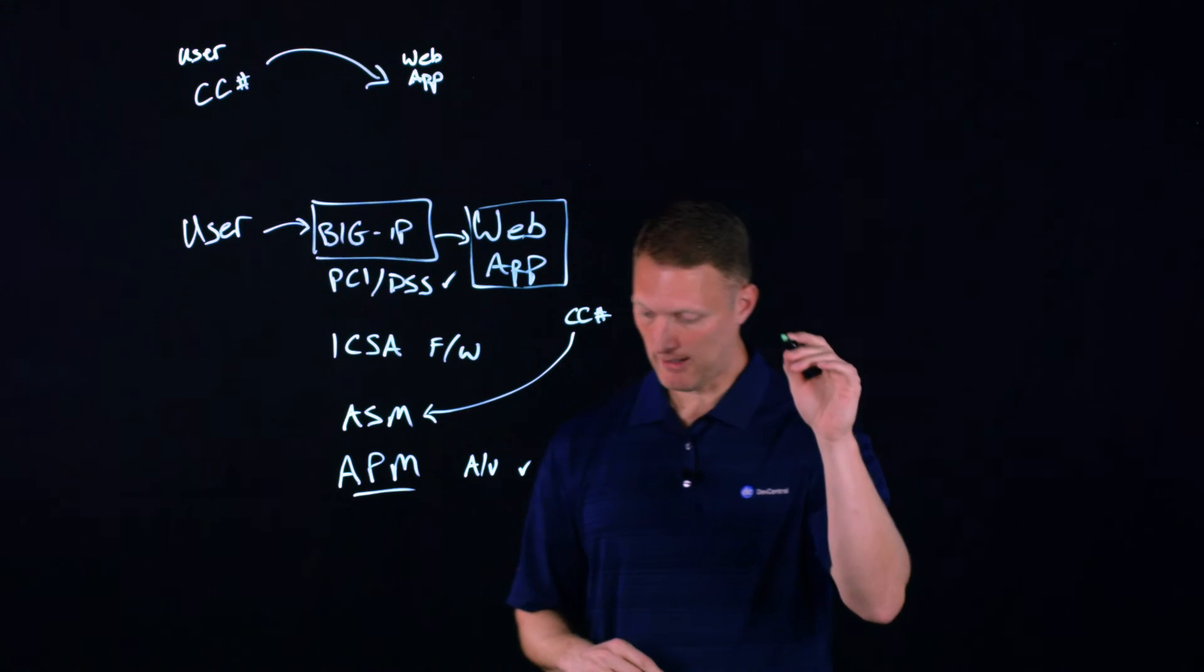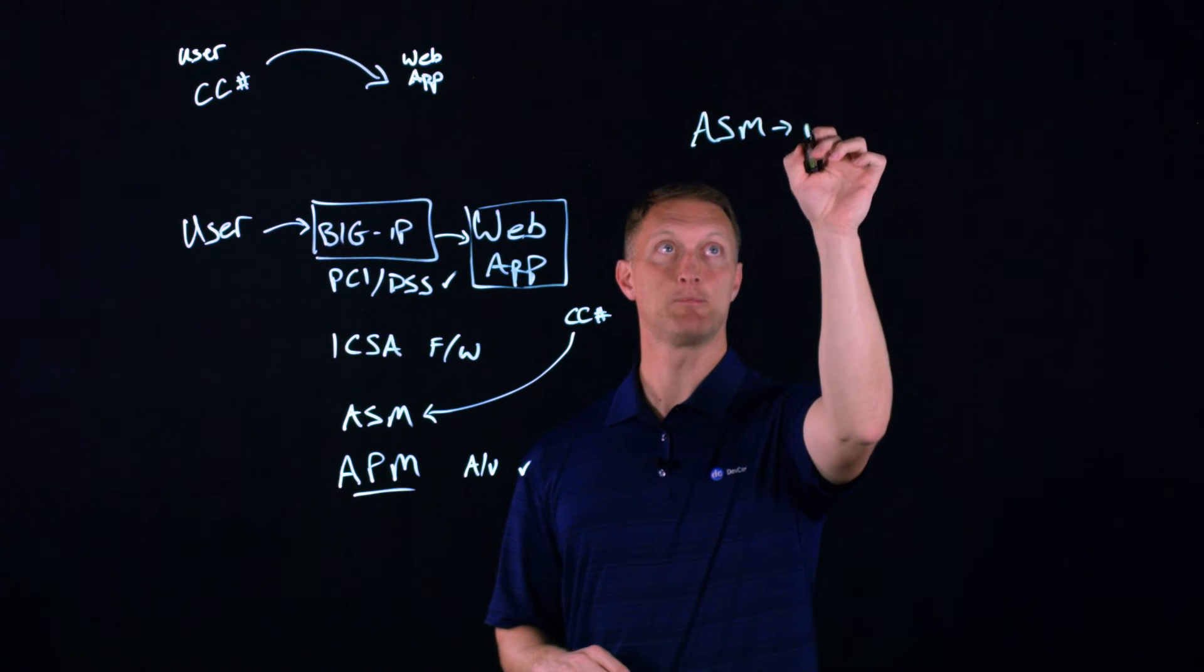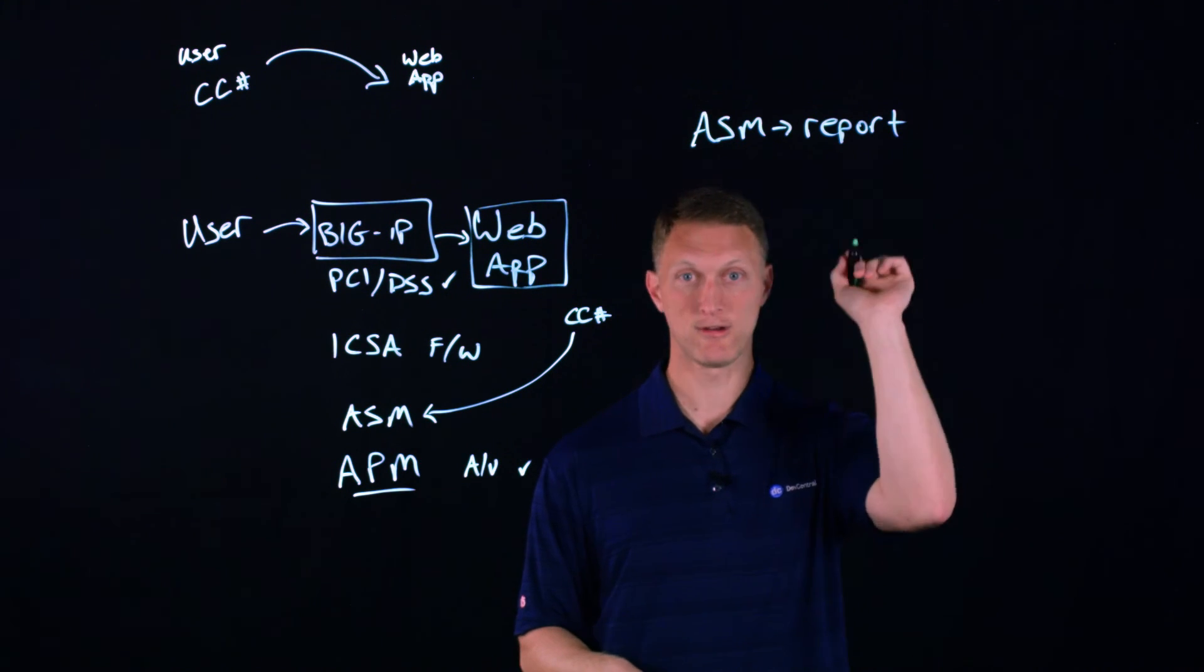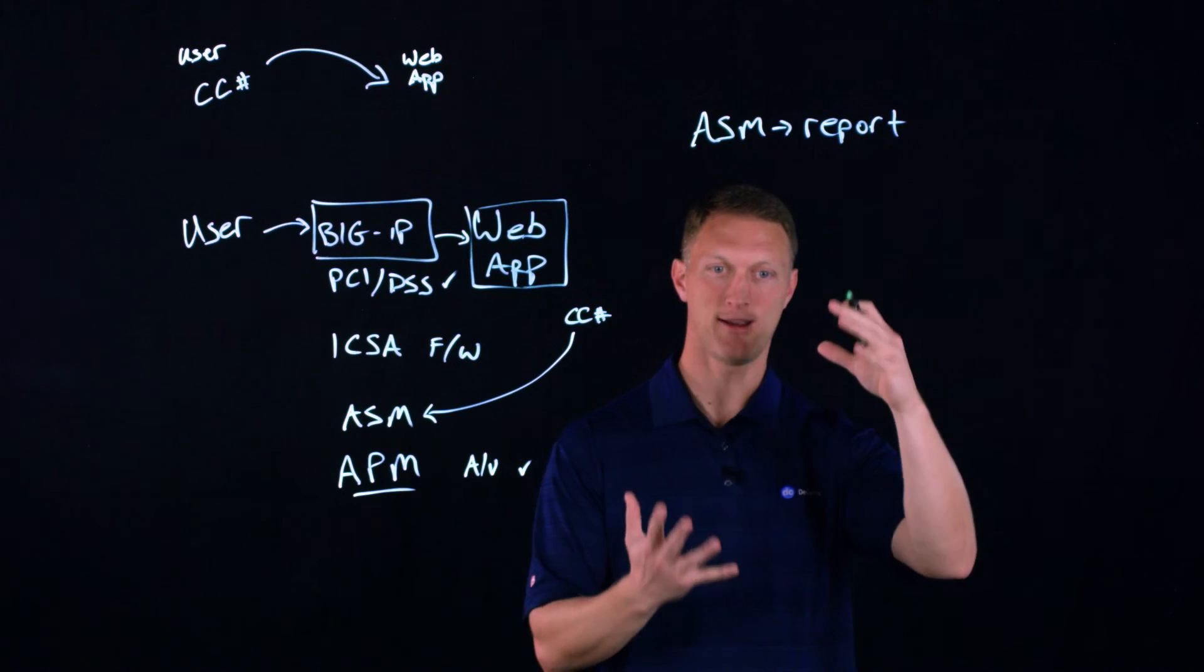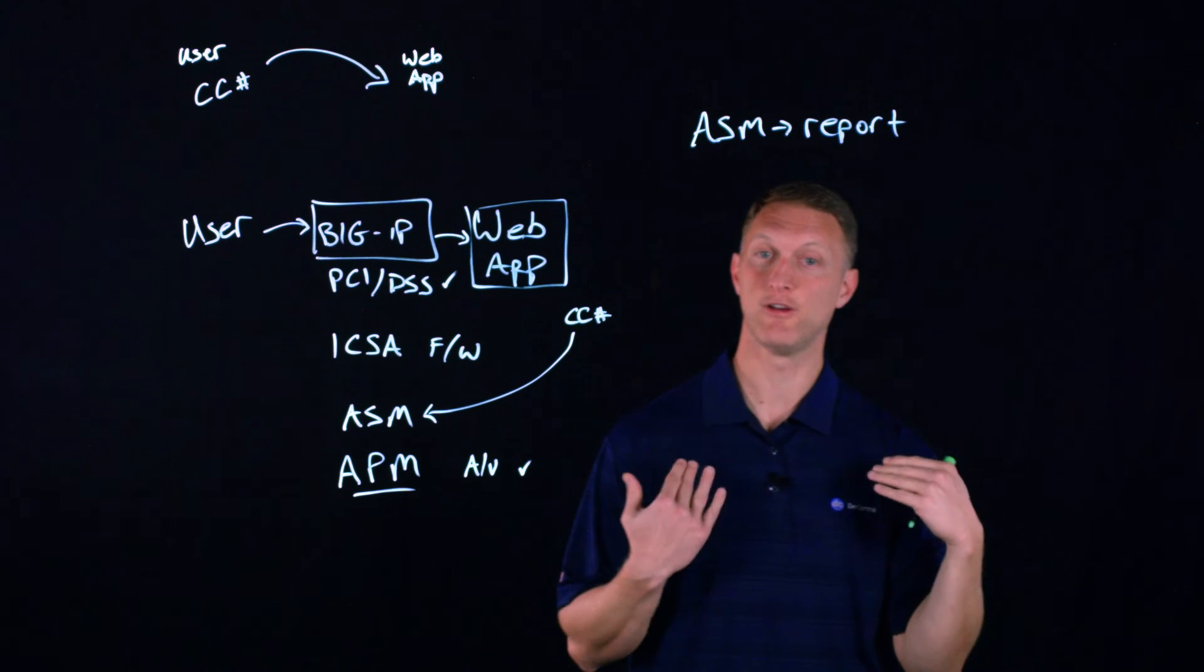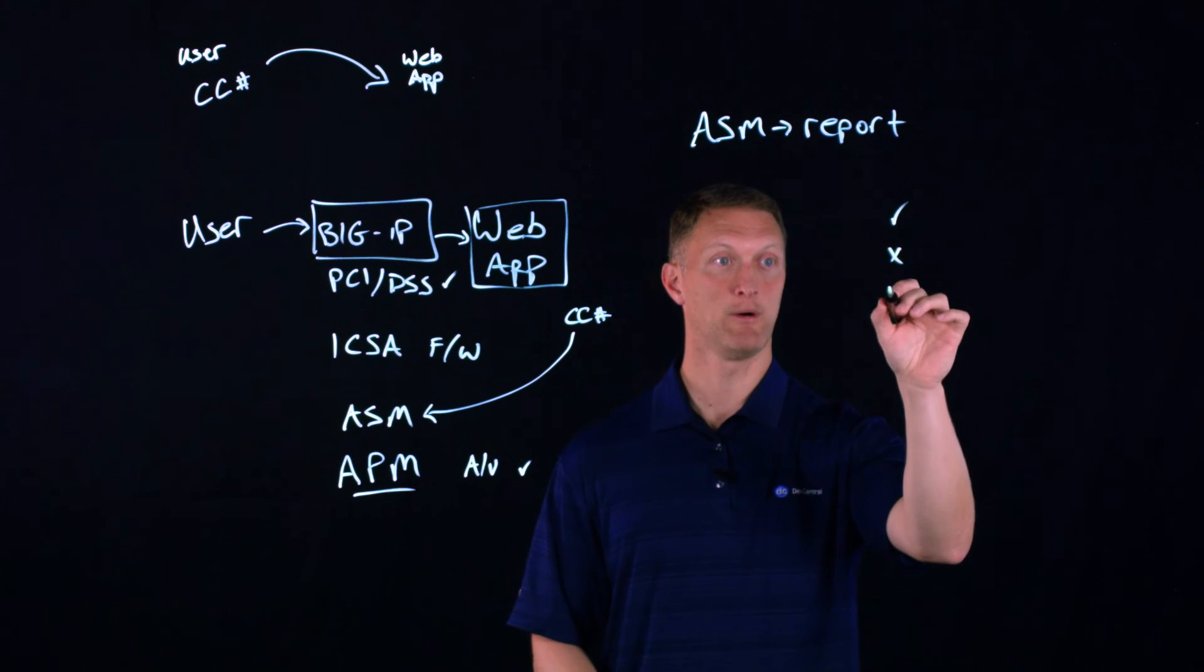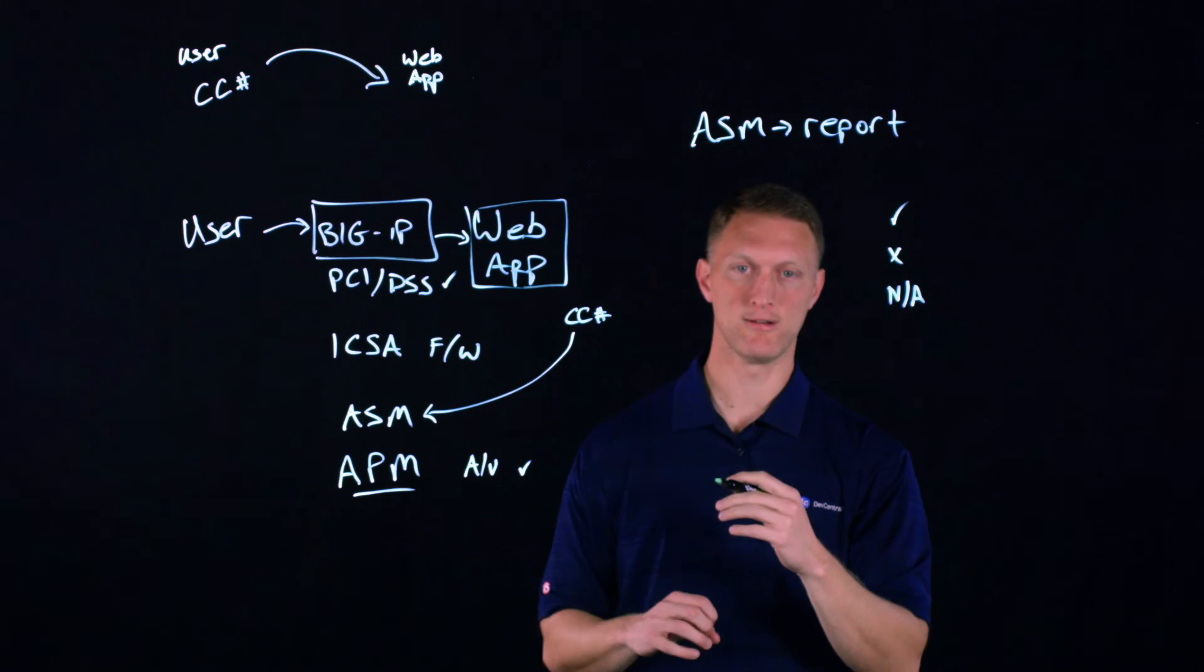A couple of the things I was going to mention is that the ASM, I'll just write it up here, ASM, and then I'll just put report. And what you can do on the ASM specifically, this is our web application firewall. There's actually a little check box or a little button you can click actually that will create an on the fly and as requested, whatever, just right then and there, PCI DSS compliance report. And so not only can it tell you that, hey, this is how we're doing. It's going to list all those different things, all those different areas that I just talked about. And it's going to put a little check mark or it's going to put a little X or it's going to say, like for example, that maintain a security policy, that's not applicable in terms of what you're going to do here.